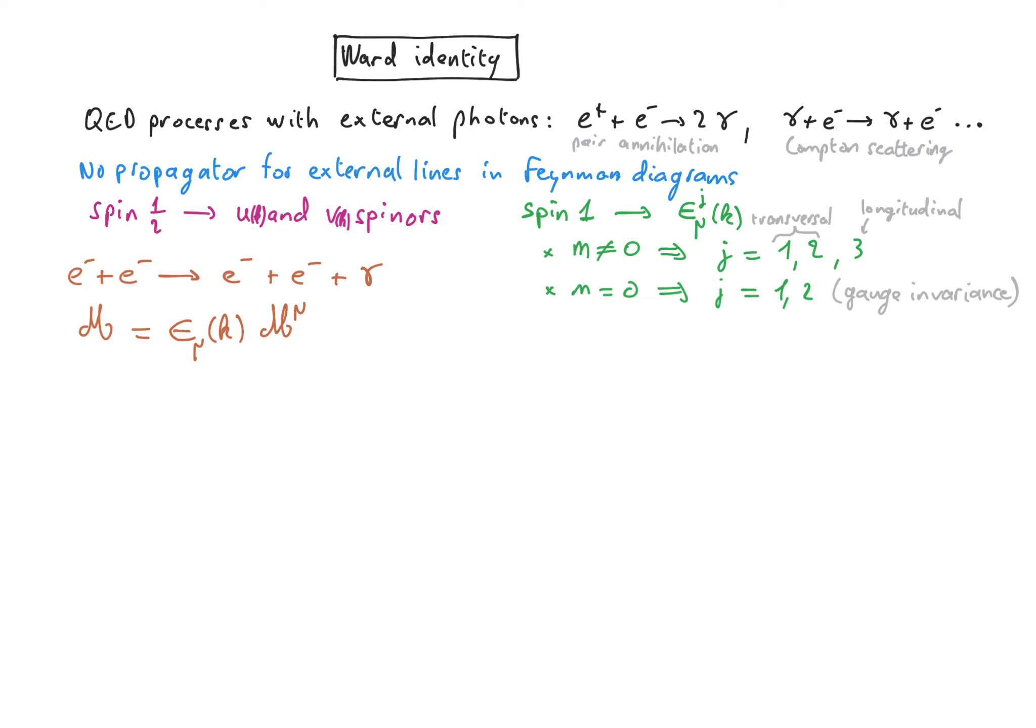We saw in the case of a massless photon that thanks to gauge invariance we could add to the polarization vector a component parallel to the four momentum without changing the physics. And what we mean by doesn't change the physics is that physical quantities like the amplitude M are unchanged when we do such gauge transformation leading to this change of polarization vectors.